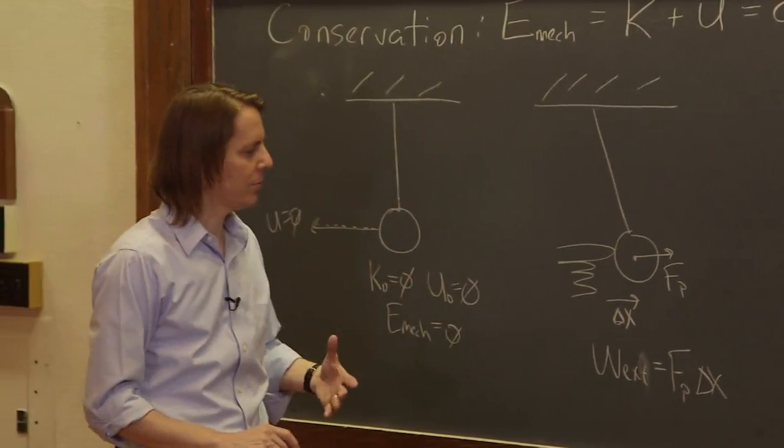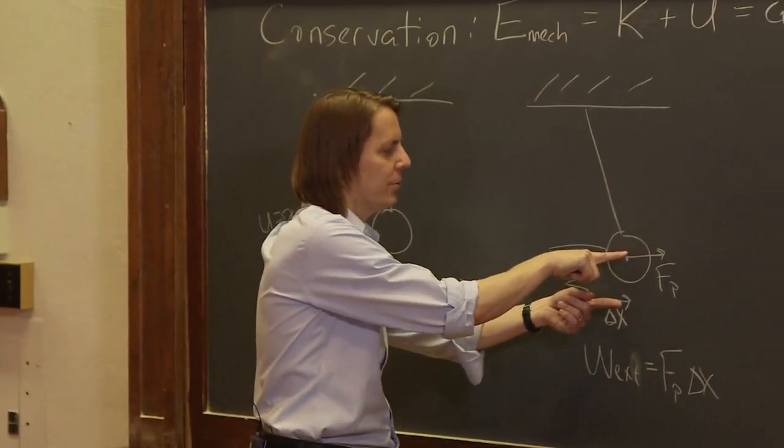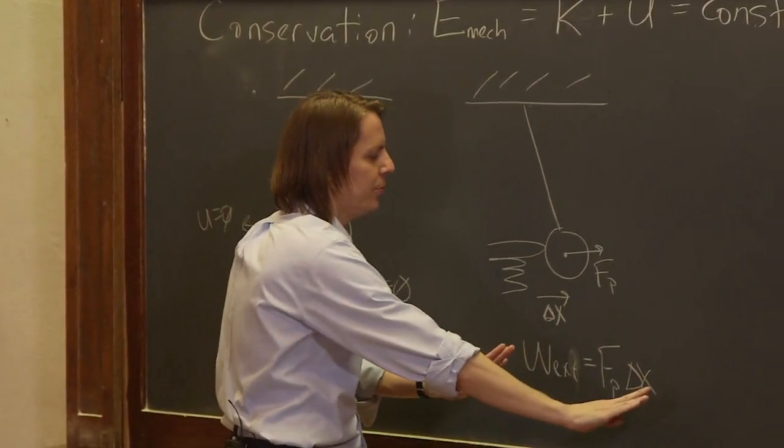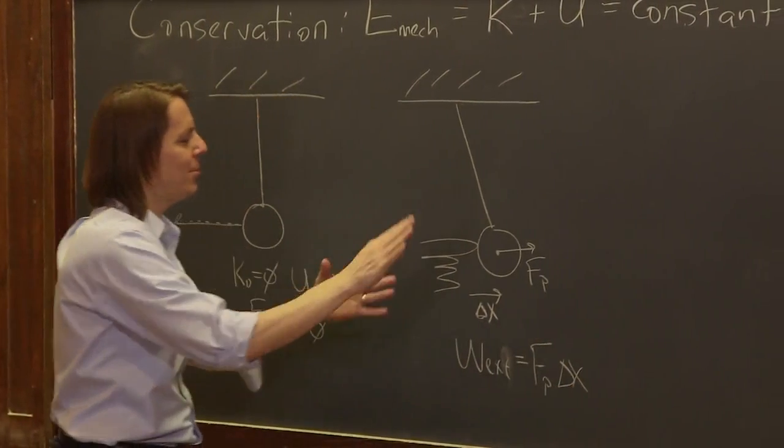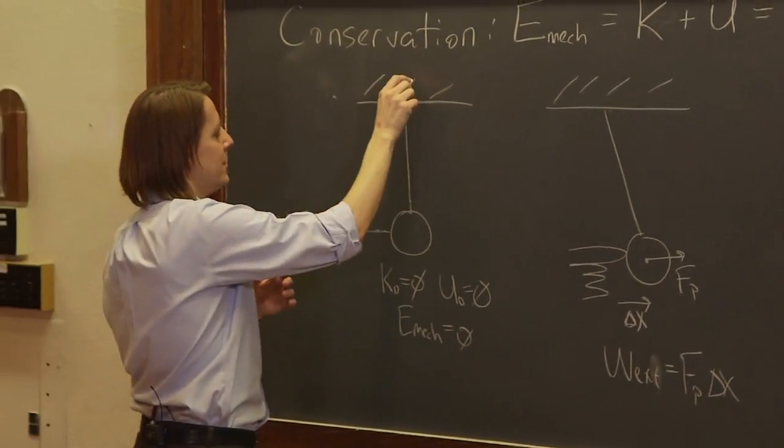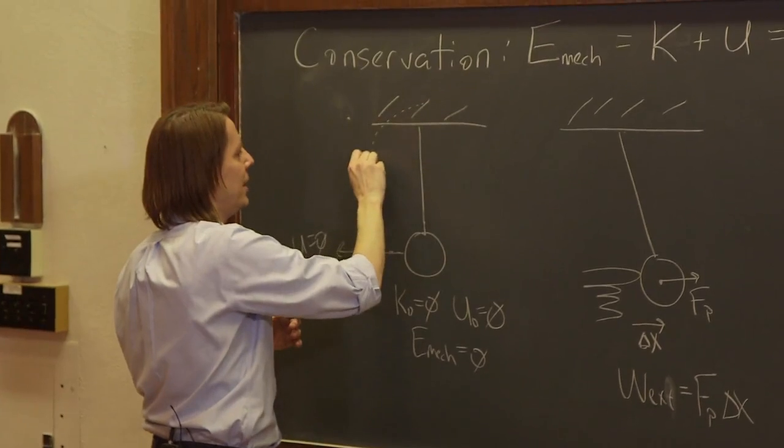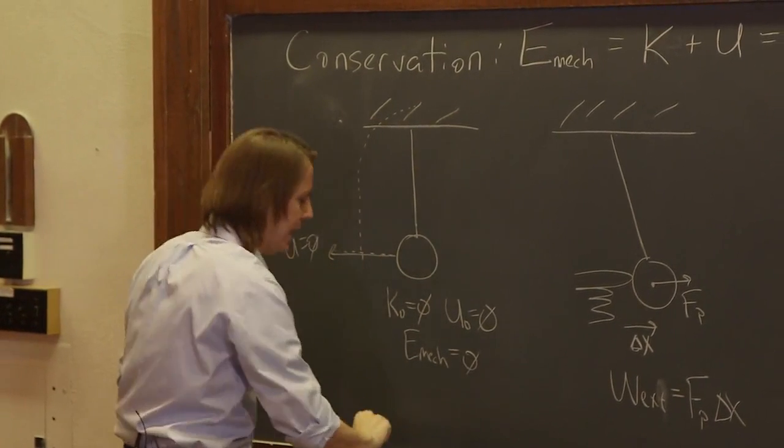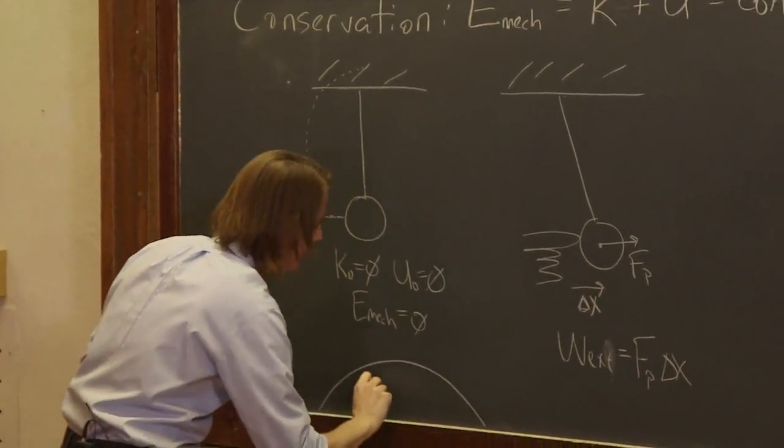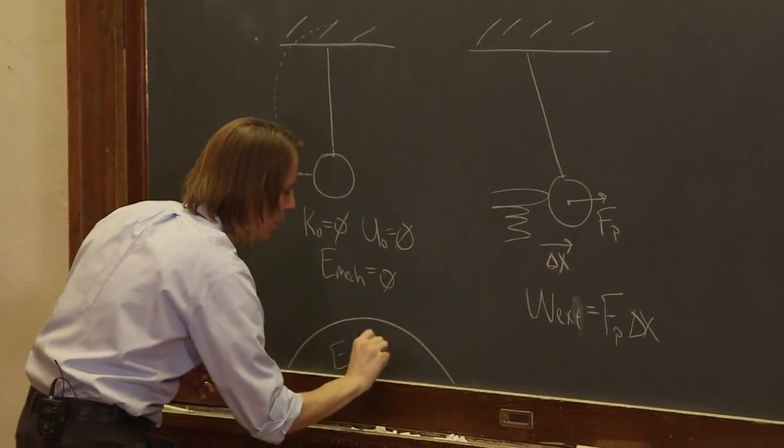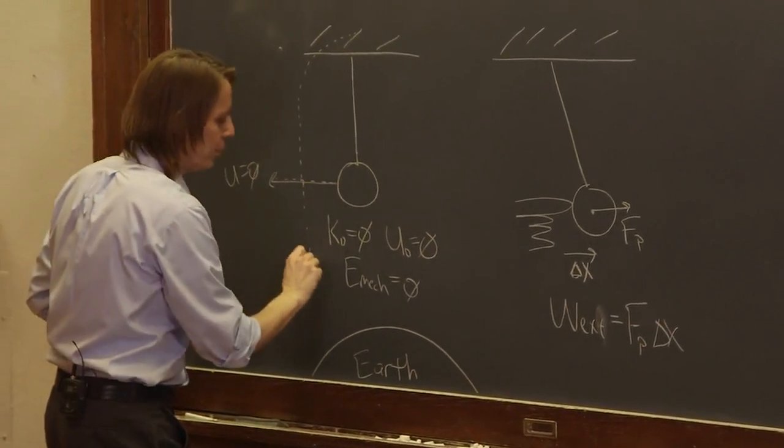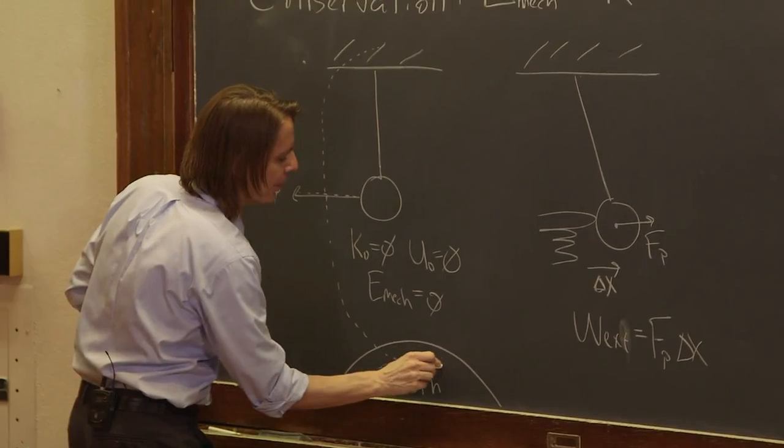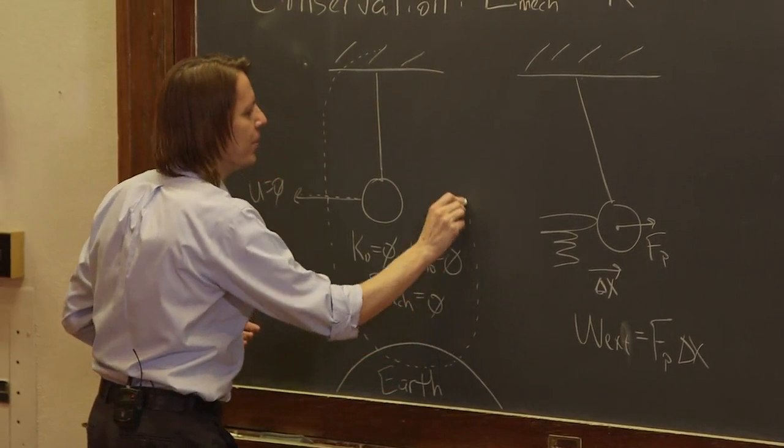And it's still Fp times delta x. It's the same work that we did as we described it before. And they're the same direction, so the cosine of zero is one. So I'm leaving off the cosine. Okay. So we have to think about the system. So the system is usually drawn with a little dotted line. It includes the pendulum. And we actually have to include the earth in the system. So here's the earth. And I will just include part of the earth, even though it takes the whole earth to make the gravity. And we'll get into the earth part later when we get to gravitation.